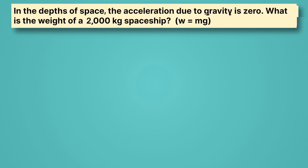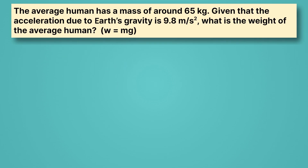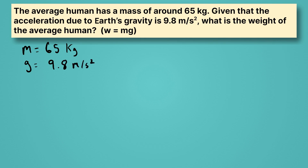The average human has a mass of around 65 kilograms. Given that the acceleration due to Earth's gravity is 9.8 meters per second squared, what is the weight of the average human? Our knowns: mass is 65 kilograms — not weight, those are two different things — and acceleration due to gravity on Earth is 9.8 meters per second squared. We want to find the weight, which is our unknown.